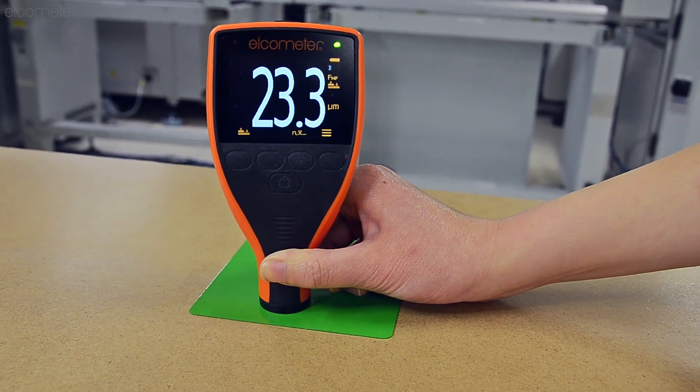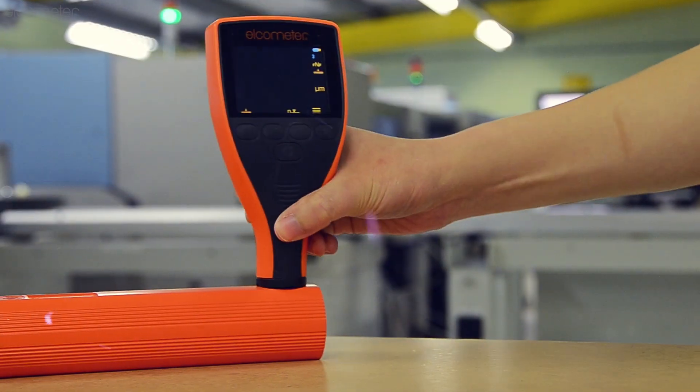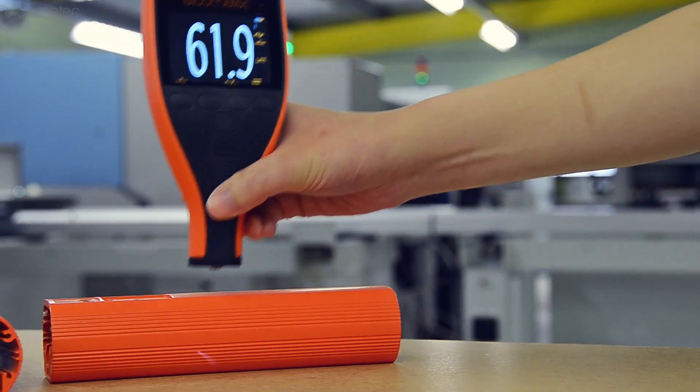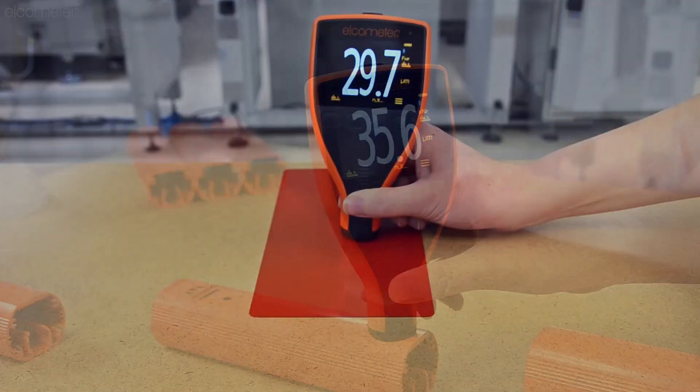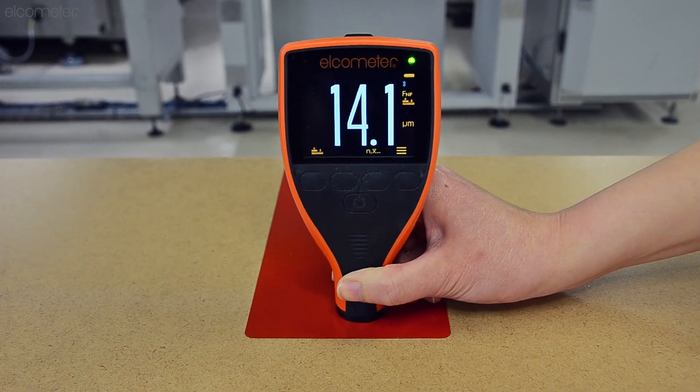Rugged, fast, accurate, easy to use and sealed against dust and powder ingress, the new Elcometer 415 is the ideal choice when it comes to measuring industrial paint or powder thicknesses.